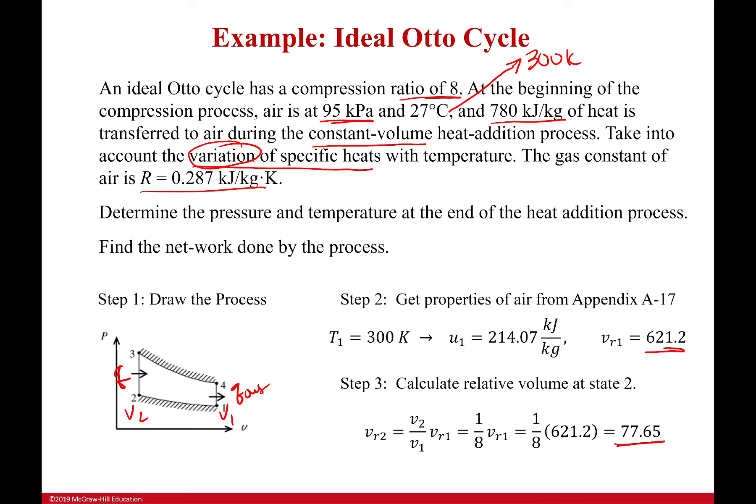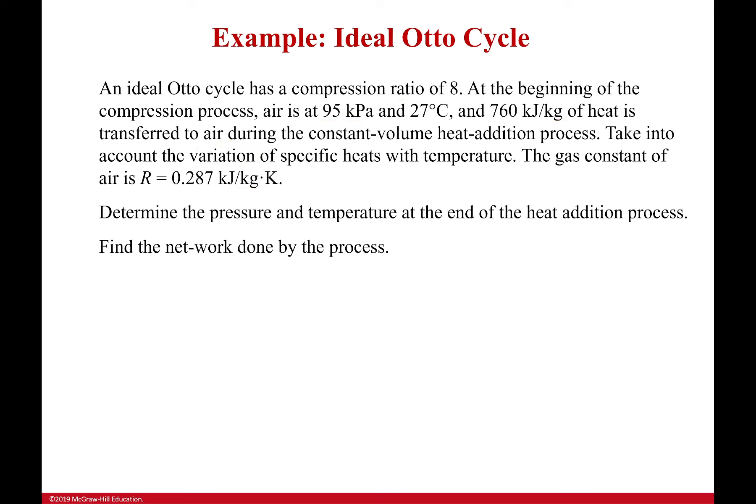So, I'm going to do that. I have a relative volume at one. I pulled that out from the table. I'm going to multiply that by my ratio here. I have V2 over V1 because it's getting smaller. And so, I get a relative volume two of 77.65. How am I going to use that? Well, when I went to Appendix A17, I was able to use a temperature to get an internal energy and a relative volume. And guess what? I can also use relative volume to get internal energy and temperature. I can do it in reverse if I want to. How? Interpolation unless you're super lucky.